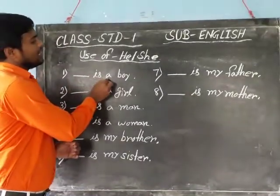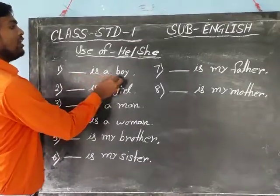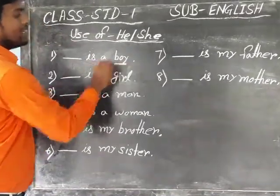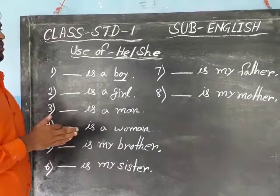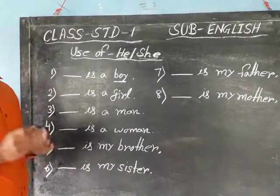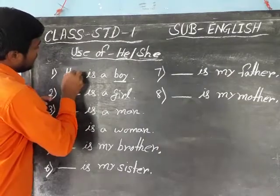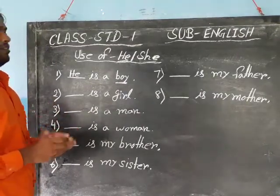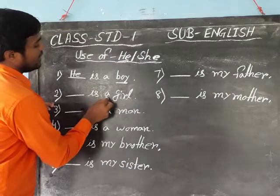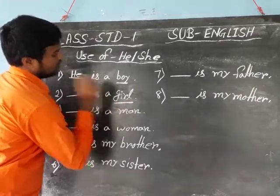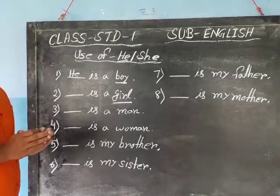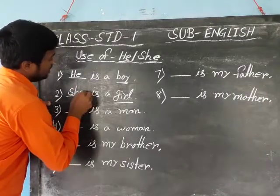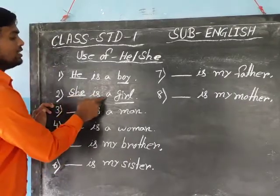First example: 'That is a boy.' Boy — is boy a male person or female person? Boy is a male person, so use 'he': He is a boy. He is used for male person. Next: 'That is a girl.' Girl is a female person — feminine gender. Use 'she': She is a girl.